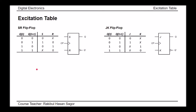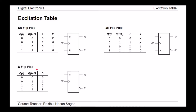Next, let's construct the excitation table for D flip-flop. The operation is simple: D is transferred from input to output on every clock pulse triggering. If present state is 0 and next state should be 0, D equals 0. If present state is 0 and next state should be 1, D equals 1. If present state is 1 and next state should be 0, D equals 0. If present state is 1 and next state should be 1, D equals 1.